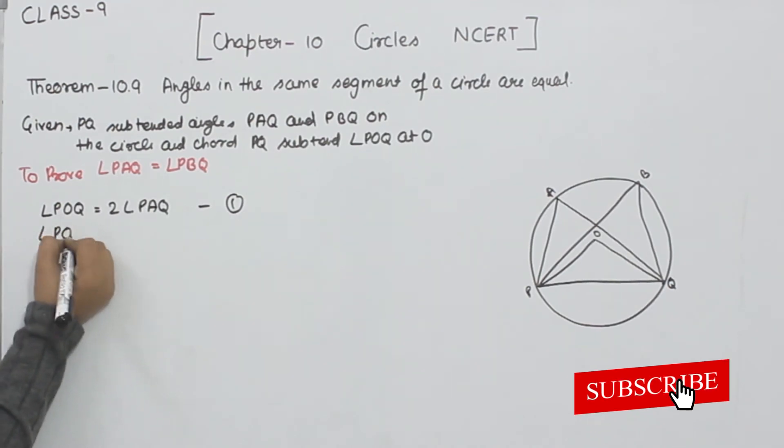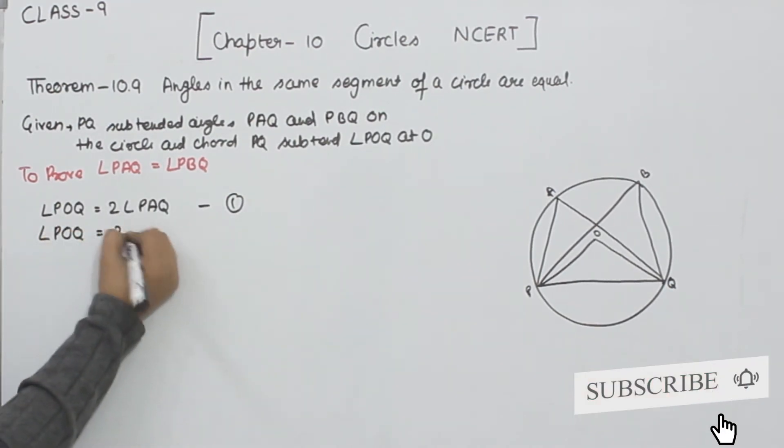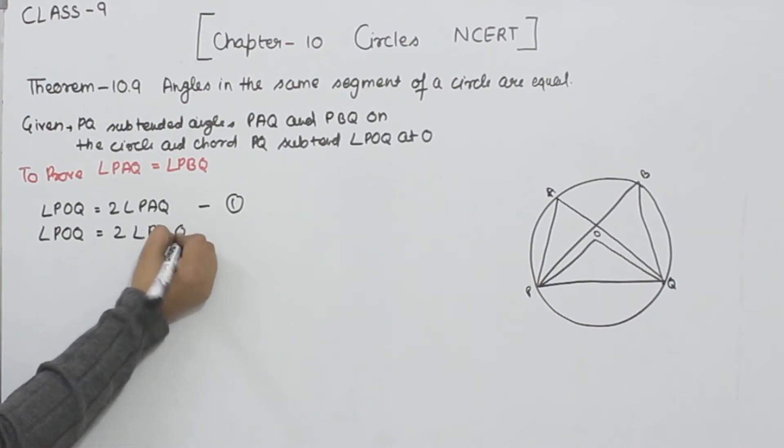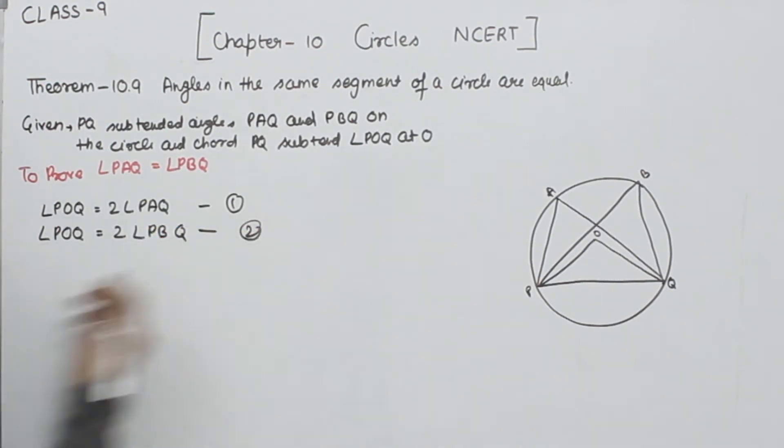Now angle POQ is 2 times angle PBQ. This is equation number 2. Why?